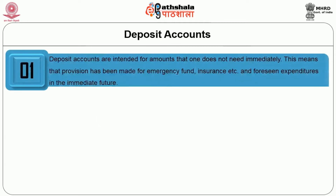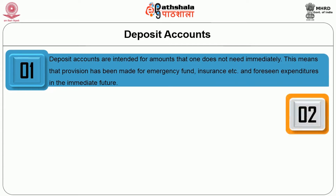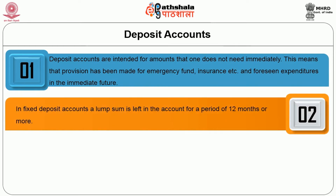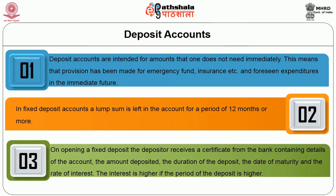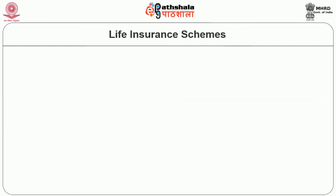Then deposit accounts. Deposit accounts are intended for amounts that one does not need immediately. This means that provisions have been made for emergency funds, insurance, and unforeseen expenditure in the immediate future. For fixed deposit amounts, a lump sum is left in the account for a period of 12 months or more. On opening a fixed deposit, the depositor receives a certificate from the bank containing details of the account, the amount deposited, the duration of the deposit, the date of maturity, and the rate of interest. The interest is higher if the period of the deposit is longer.